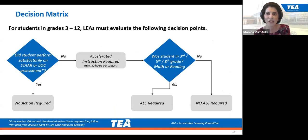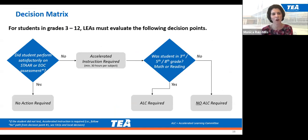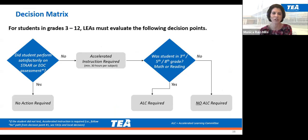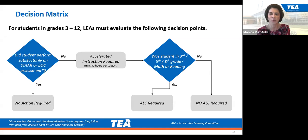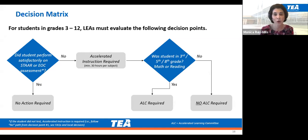Adding to the decision matrix: did the student perform satisfactorily on the STAAR or end-of-course assessment? If yes, no action is required. If no, accelerated instruction is required for 30 hours per subject. Was the student in third, fifth, or eighth grade, and did the student perform unsatisfactorily in math or reading? If they did not perform satisfactorily, the ALC is required. If they performed satisfactorily, no ALC is required.